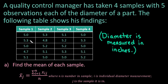So what we have is sample one, sample two, sample three, sample four, and all of the respective data points for each sample.